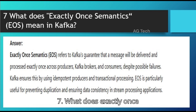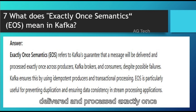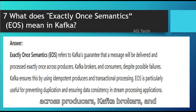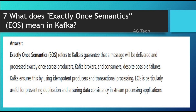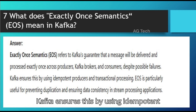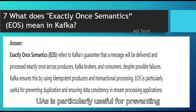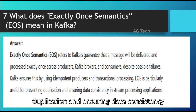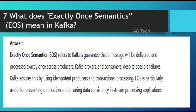Question 7: What does exactly-once semantics (EOS) mean in Kafka? Answer: Exactly-once semantics (EOS) refers to Kafka's guarantee that a message will be delivered and processed exactly once across producers, Kafka brokers, and consumers, despite possible failures. Kafka ensures this by using idempotent producers and transactional processing. EOS is particularly useful for preventing duplication and ensuring data consistency in stream processing applications.